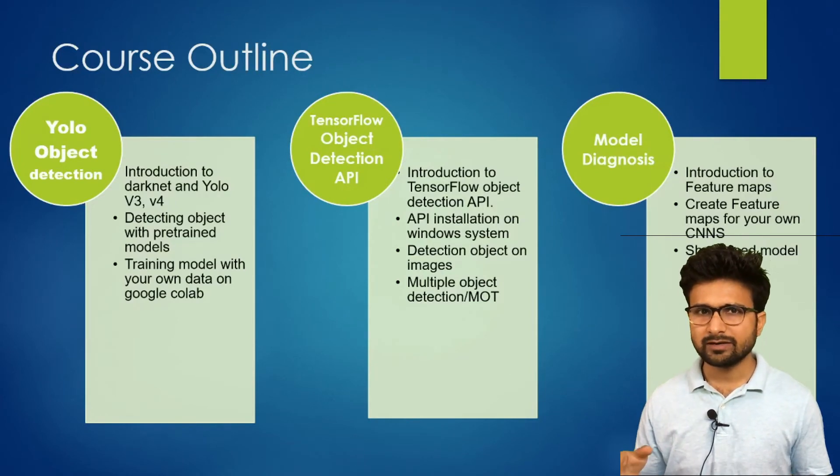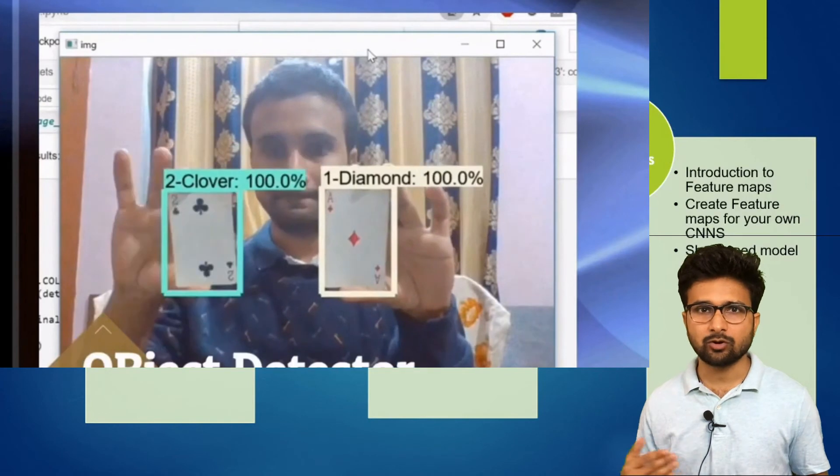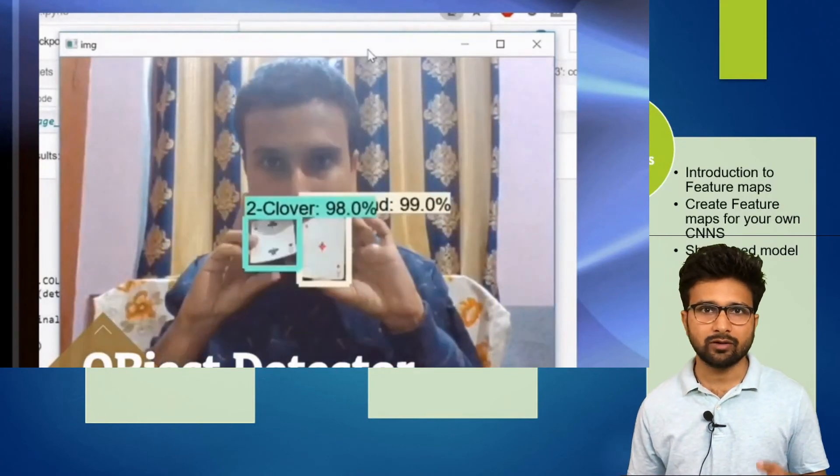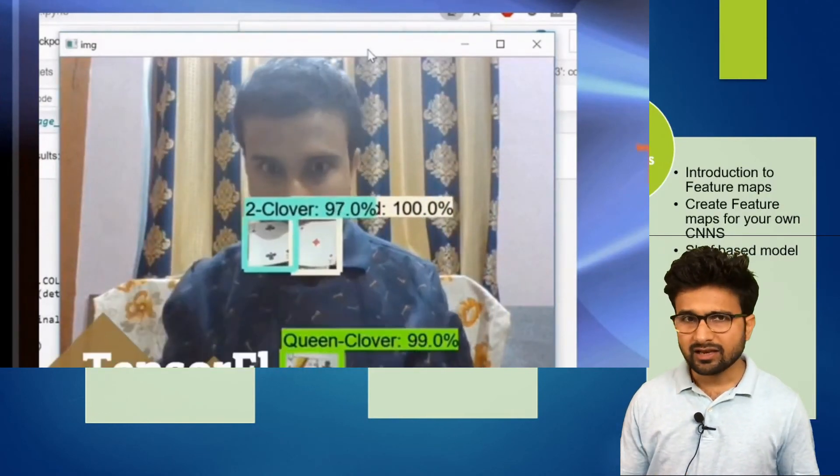In the last part, we will create this object detection API for our own and try to apply it to our own images.